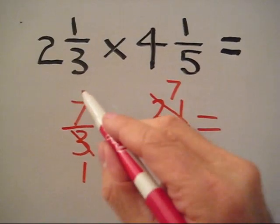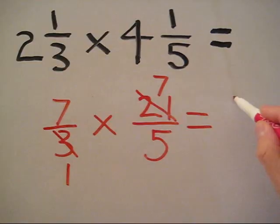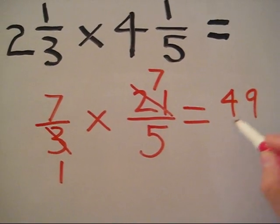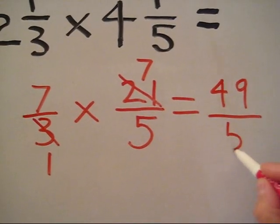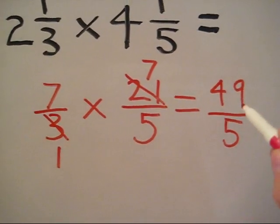Now, all we do is multiply across. 7 times 7 is 49. 1 times 5 is 5. And we have an answer of 49 fifths.